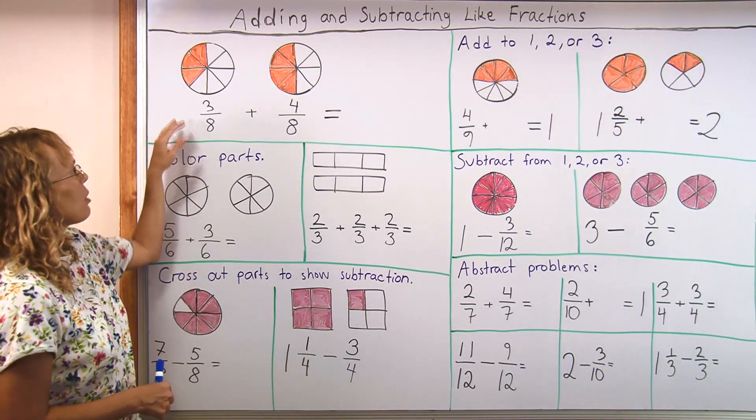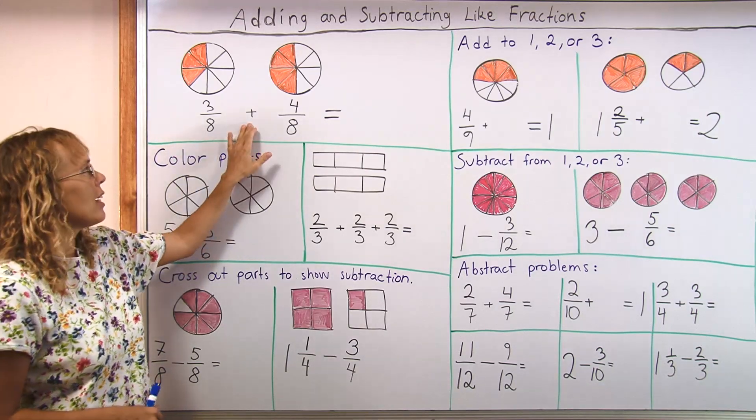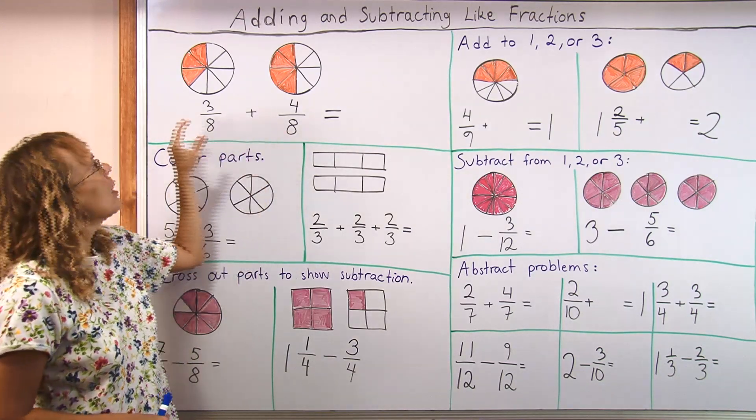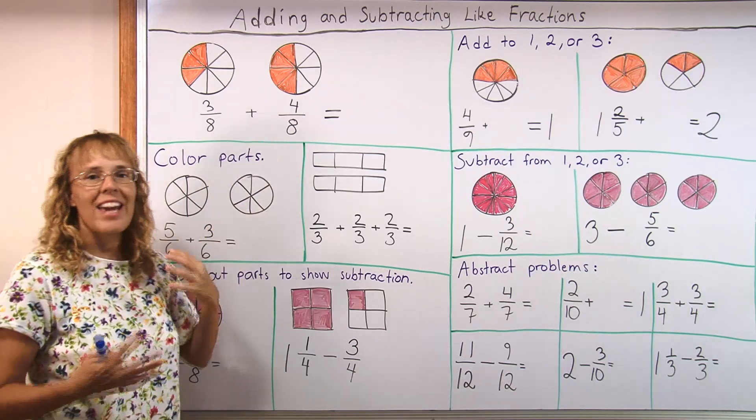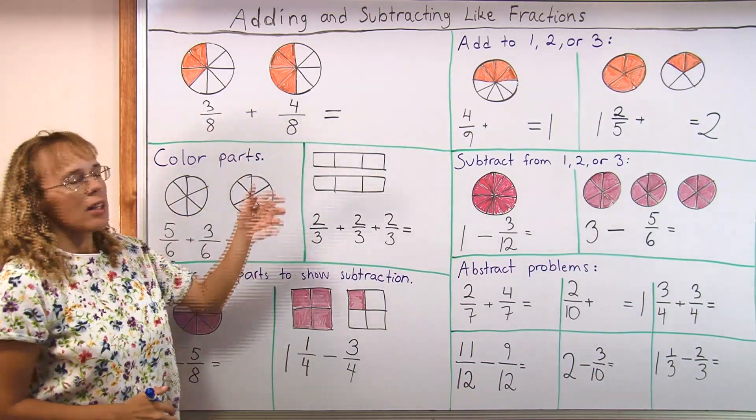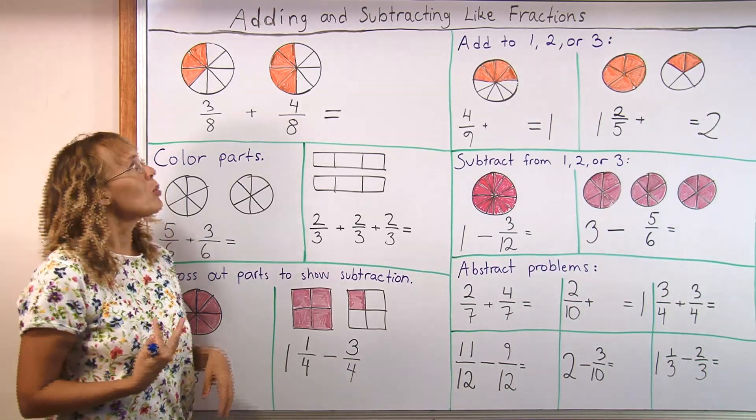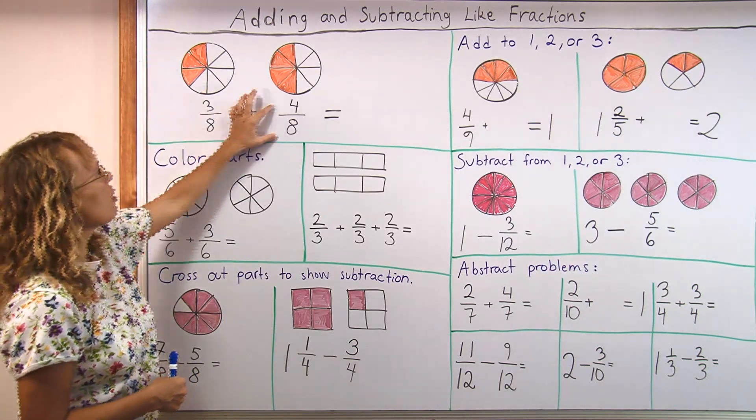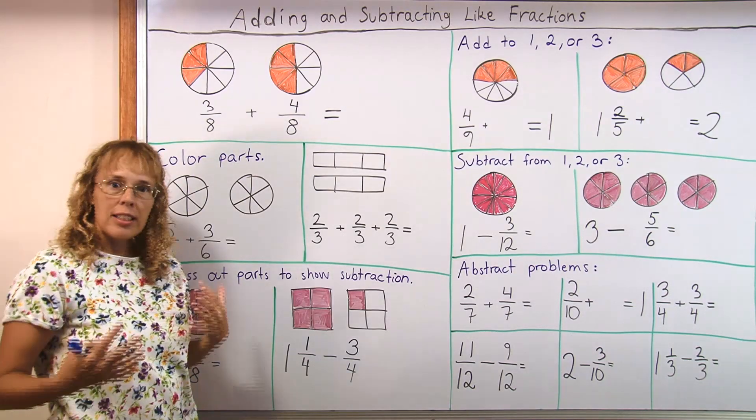For example, we would have 3 eighths and then add 4 eighths. And so both of these fractions have eighths, the same number here. And this is a typical problem like it might appear in a school book. Three eighths and a picture, four eighths and a picture.